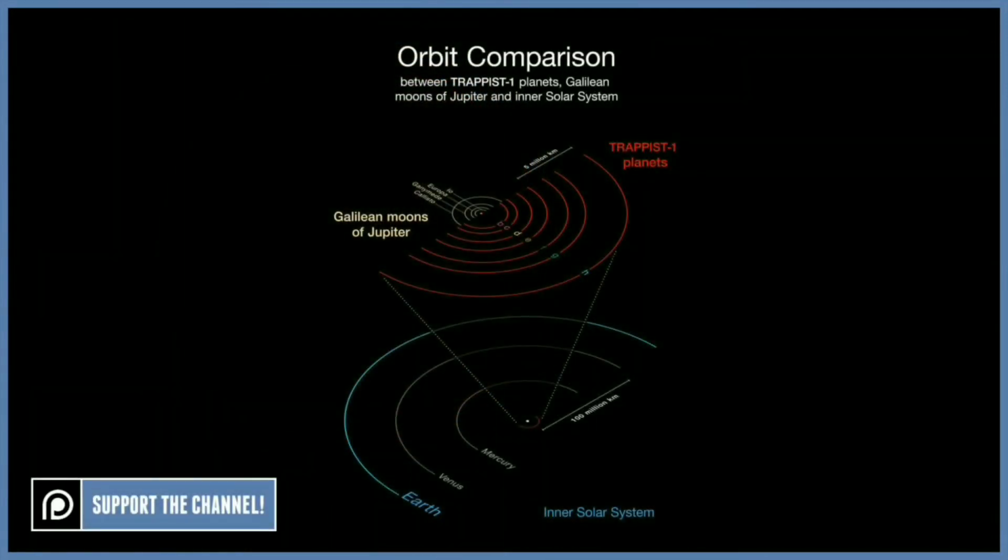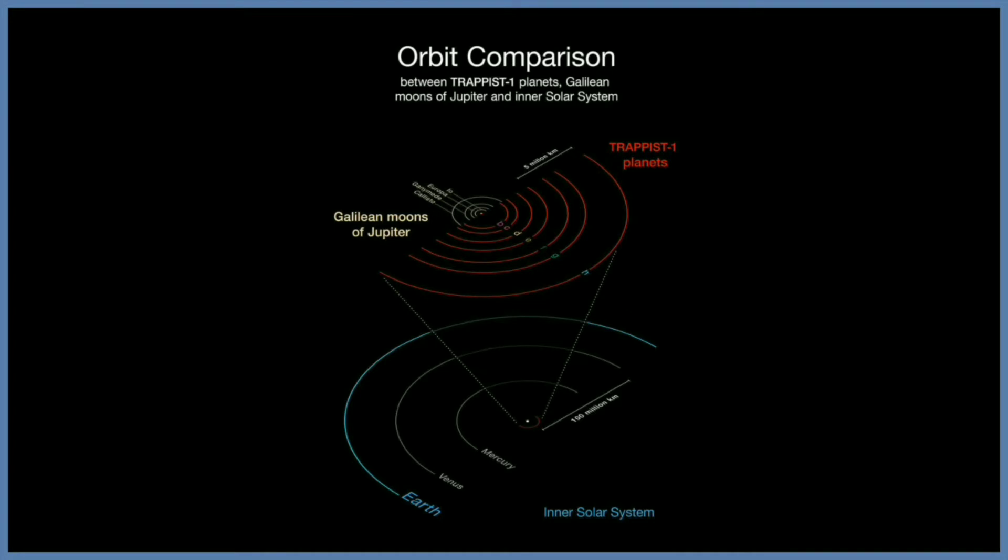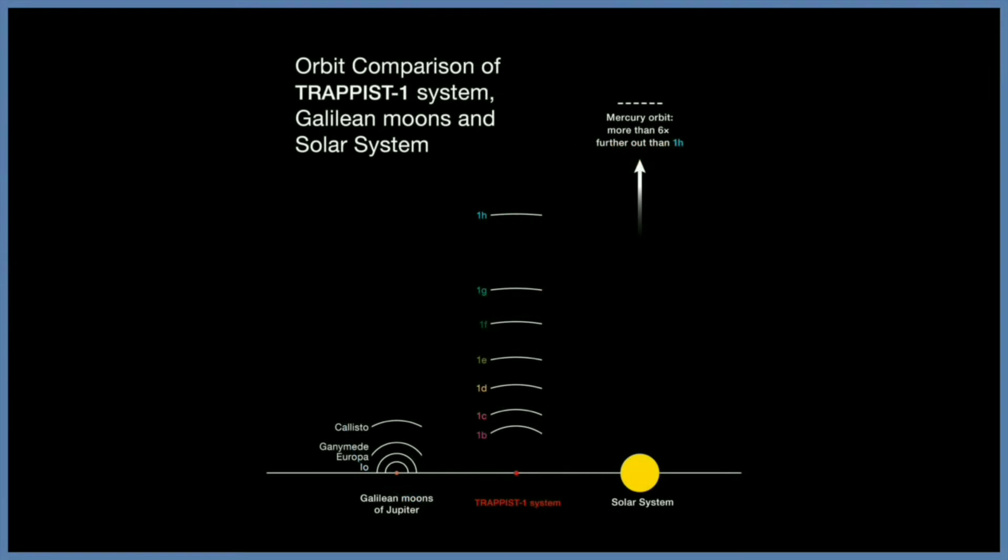All seven planets in this system orbit closer to its host star than Mercury does to our sun. This means that the planets are also very close to each other.